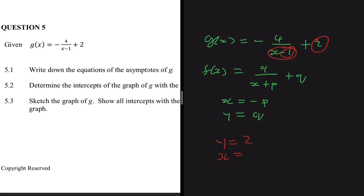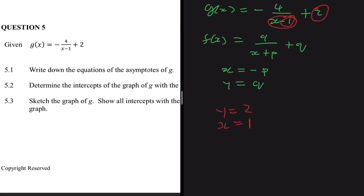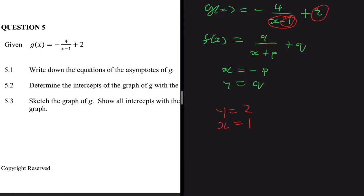Since p equals minus 1, minus p equals positive 1, so the vertical asymptote is x equals 1. To summarize: the horizontal asymptote is y equals 2, and the vertical asymptote is x equals 1. An alternative way to find the vertical asymptote is to set x minus 1 equal to 0, giving x equals 1.